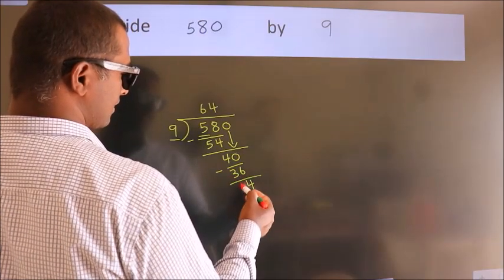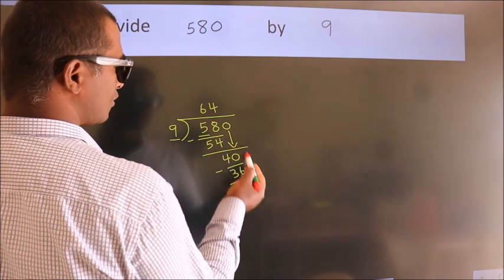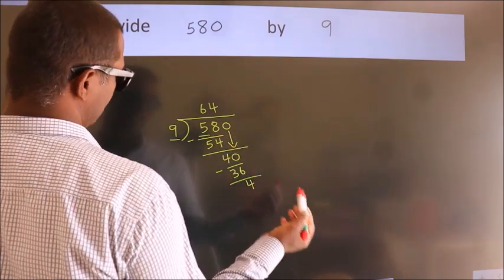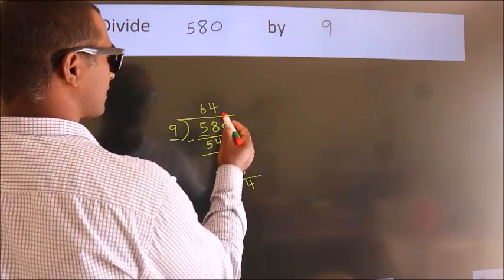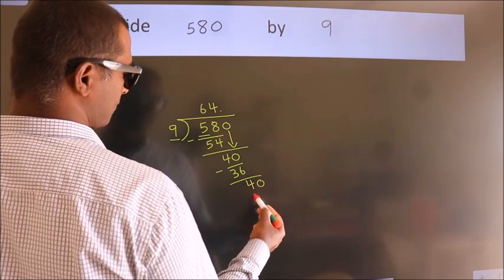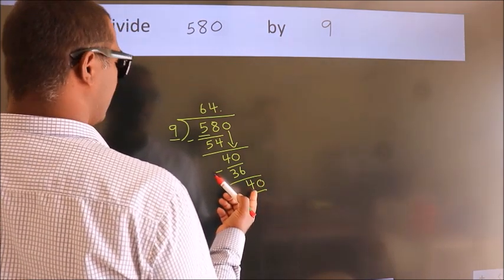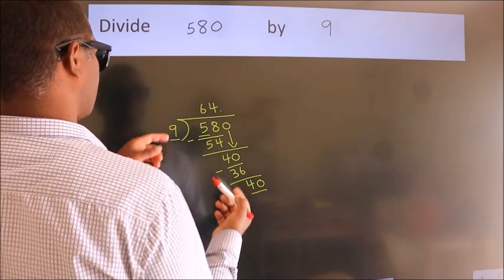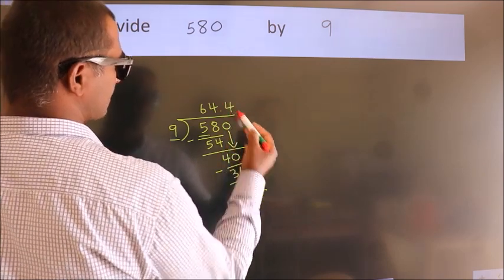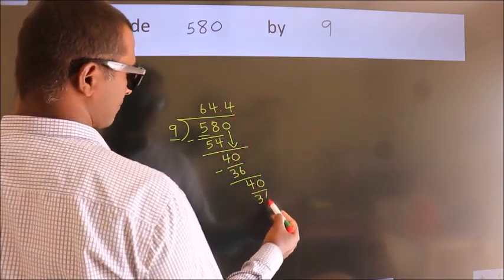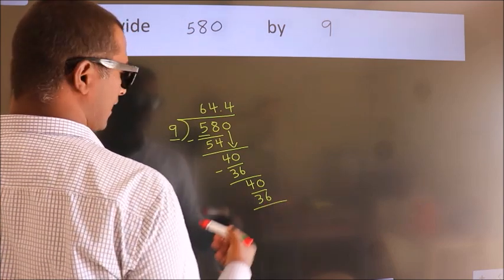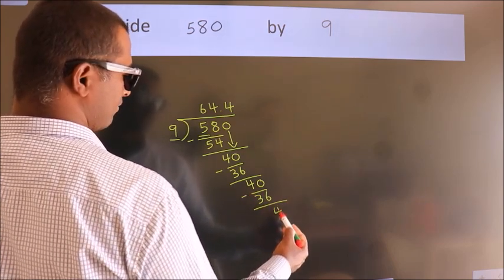After this, no more numbers to bring down. So what we do is, we put a dot and take 0. So 40. A number close to 40 in the 9 table is 9 times 4 equals 36. Now we subtract, we get 4.